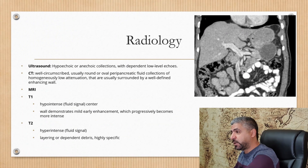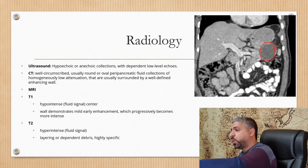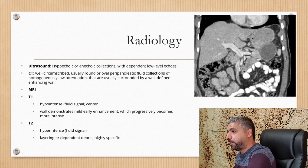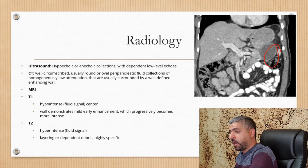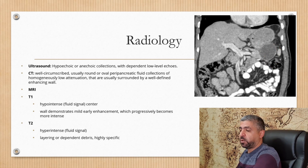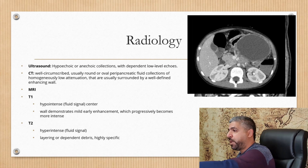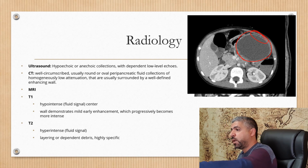On CT scan, we will see a well-circumscribed round or oval peripancreatic fluid collection with homogeneous low attenuation and a well-defined enhancing wall because it is part of the human body. On MRI, T1 will show fluid hypointense signal and T2 will show fluid hyperintense signal. The wall shows marked post-contrast enhancement on T1, increasing over time. On T2, you'll see layering of dependent debris — if you see this, it is highly suggestive of pancreatic pseudocyst. You can see the pancreatic cystic lesion with a relatively thick wall showing post-contrast enhancement after an attack of acute pancreatitis.